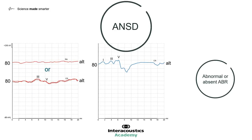Absent ABRs are easy to understand, but an abnormal ABR can take many forms. Here in the right ear is an example of an abnormal ABR where waves 3 and 5 are clearly present but are much delayed. The top trace on the right-hand side shows an absent ABR. Although absent or abnormal ABRs are a core feature of ANSD, the reasons for the ABR findings are not clearly defined by this simple definition.